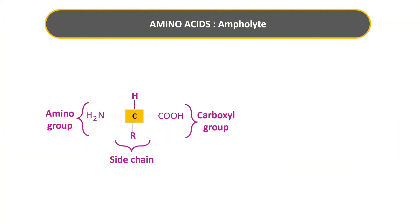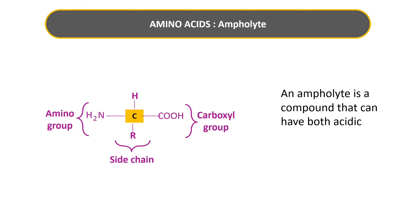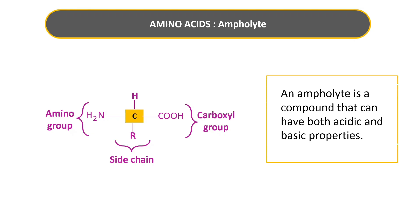An ampholyte is a compound that can have both acidic and basic properties. Looking at the structure of amino acid, the amino group is basic or alkaline in nature and the carboxyl group is acidic in nature.